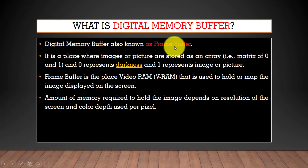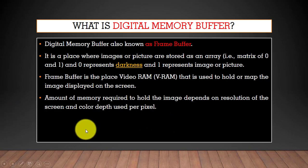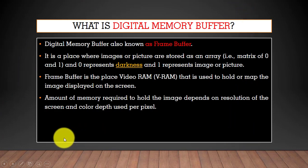The digital memory buffer is also known as a frame buffer, and it is the place where images or pictures are stored. In a computer, we use a matrix in the form of 0s and 1s to store digital images. Zero represents darkness — the black regions on screen — and one represents the image content that you can see.